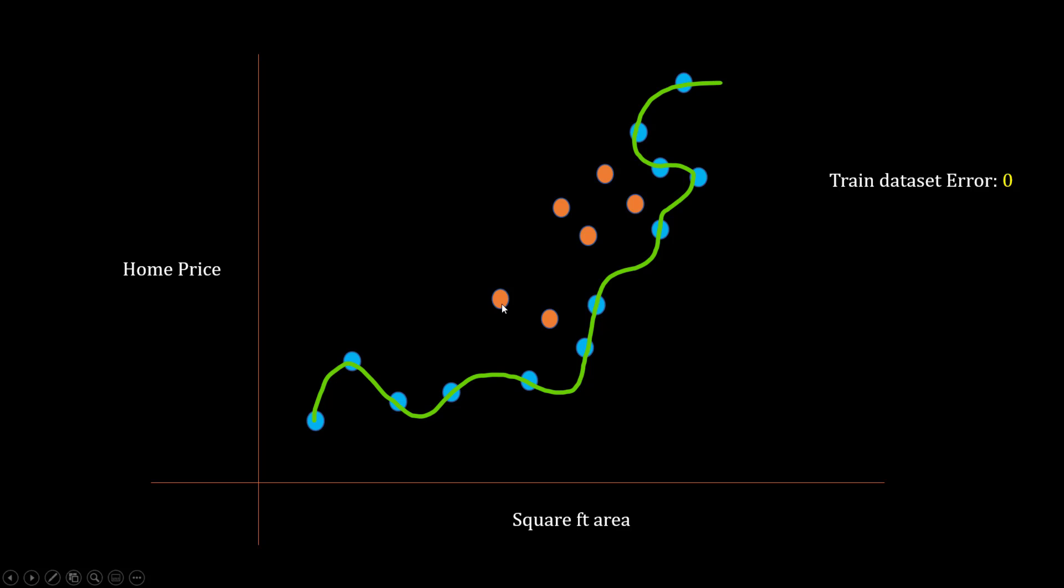Once you have this model trained which is this green line, if you want to figure out an error for this particular orange test data point, the predicted value will be somewhere here and the error will be this gray dotted line. You can measure the error for all your test data set and average it out. Let's say you get this error as 100.